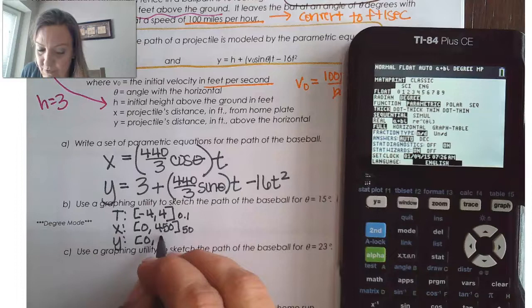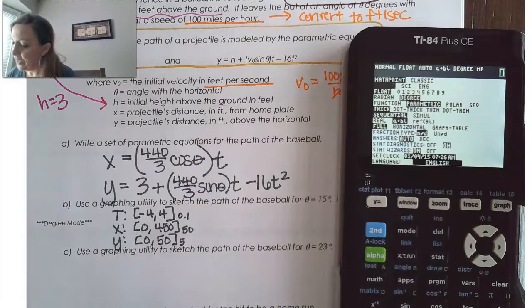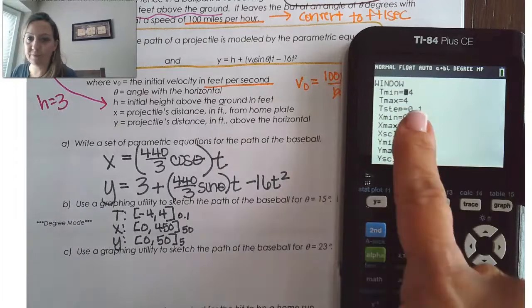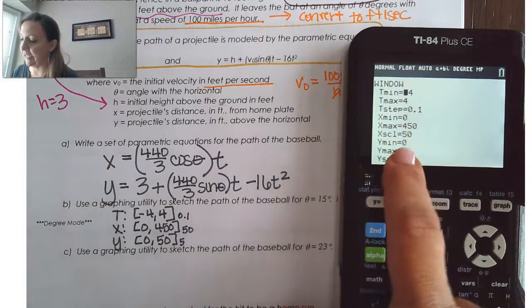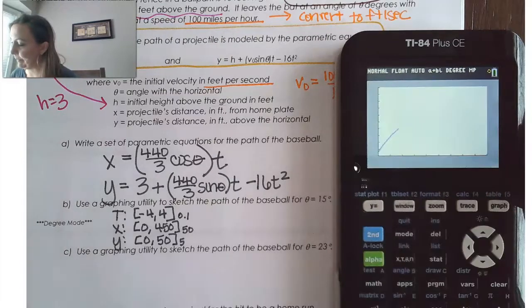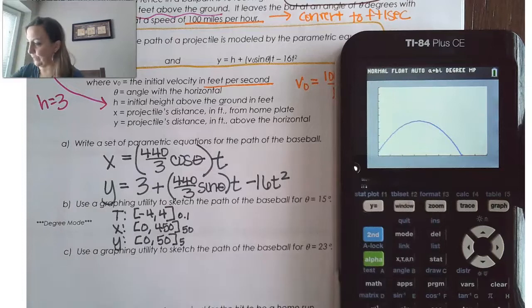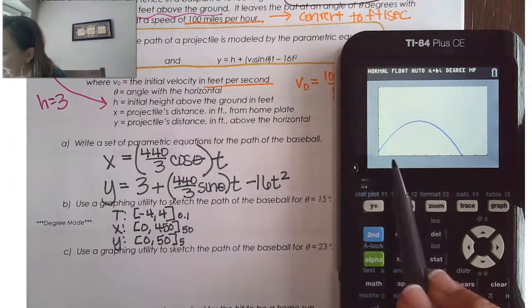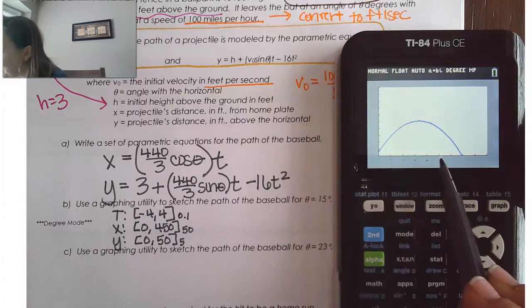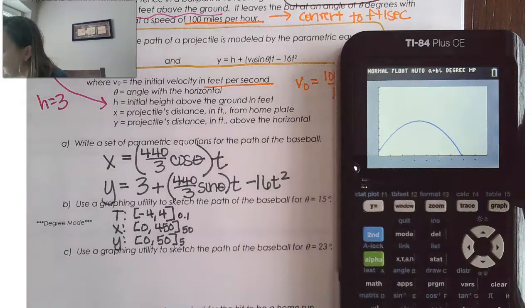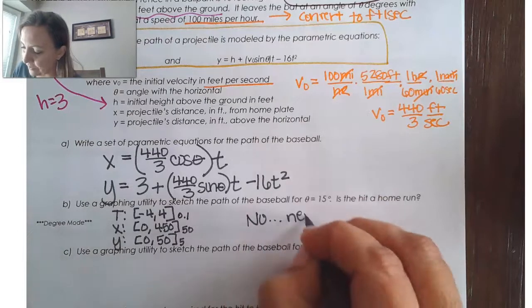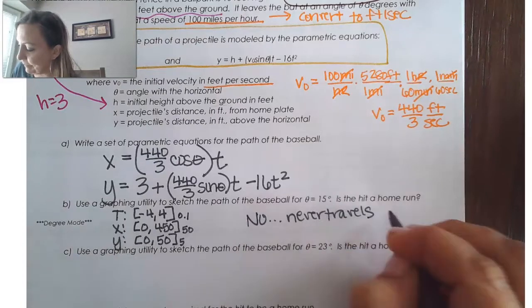So, you can have a lot of different scales, depending on that. So, I have that set up here that I'm going from negative 4 to 4 with a t-step of 0.1, 0 to 450 with a scale of 50, and 0 to 50 with a scale of 5. And now that I have that in the calculator, let's see if that's going to be a home run. Well, remember my scale was 50. So, if I'm looking here, that's 50, 100, 150, 200, 250, 300, 350, 400. Oh, my gosh, it's never getting to that 400. So, we can see that. We can say no.